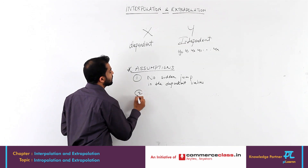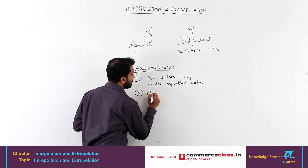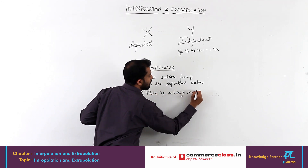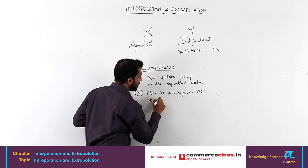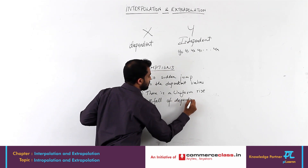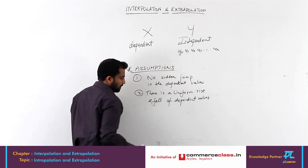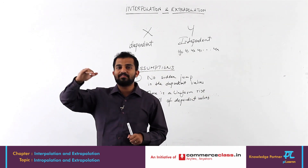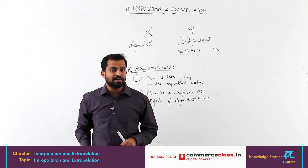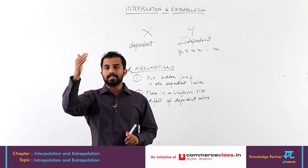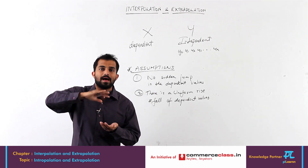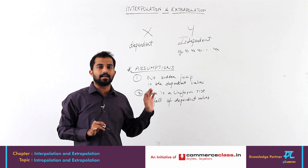The second assumption is there is a uniform rise and fall of dependent values. That means if there is a rise, it is a uniform rise — for example 80, 90, 100, 115, 130. If it is a fall, it will be like 100, 98, 96, 94, 92. There will be uniformity maintained even though values are rising or falling. This is the second assumption.